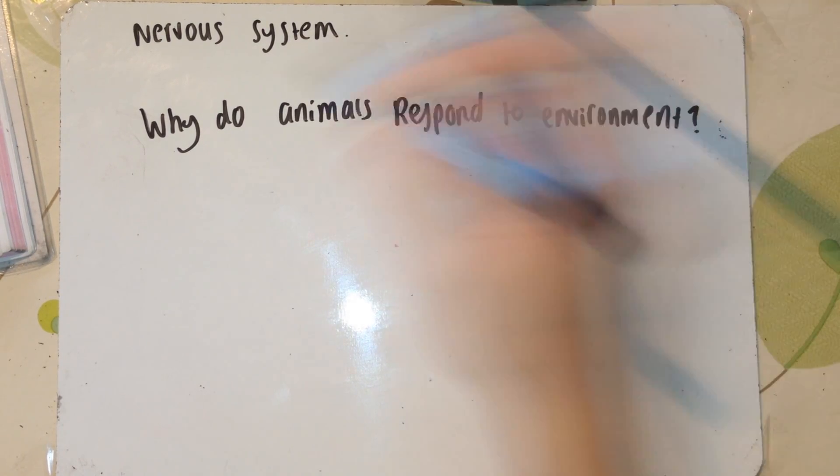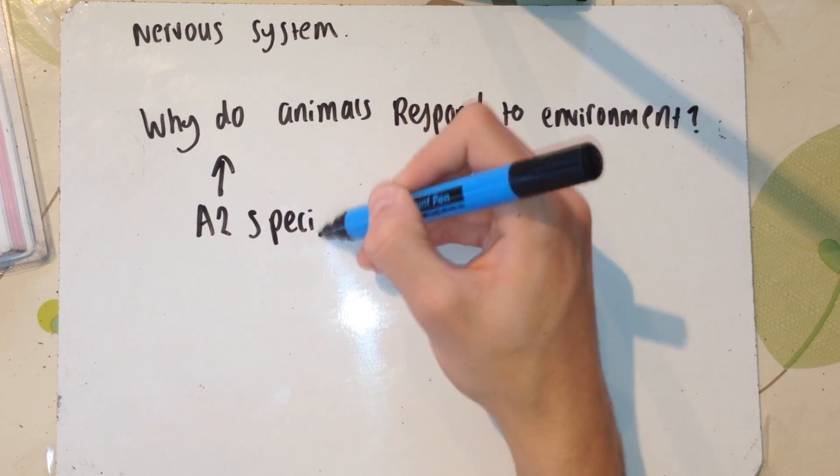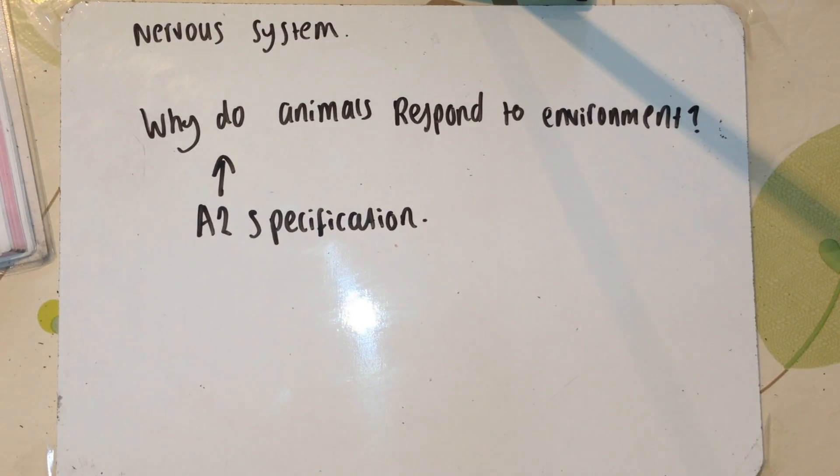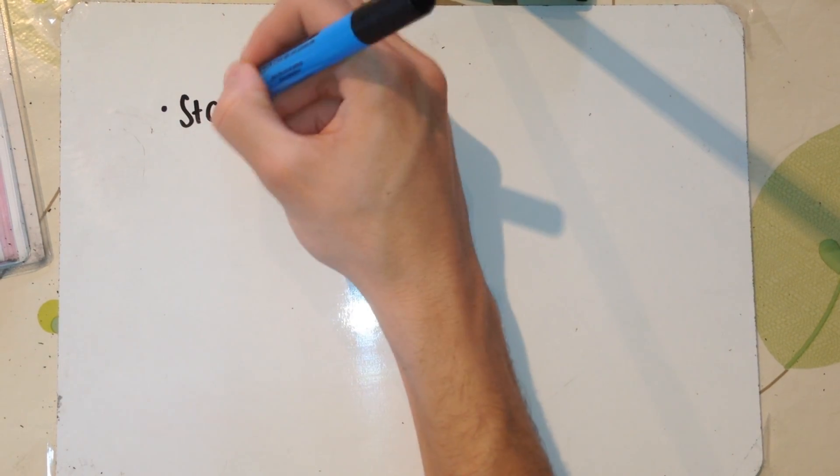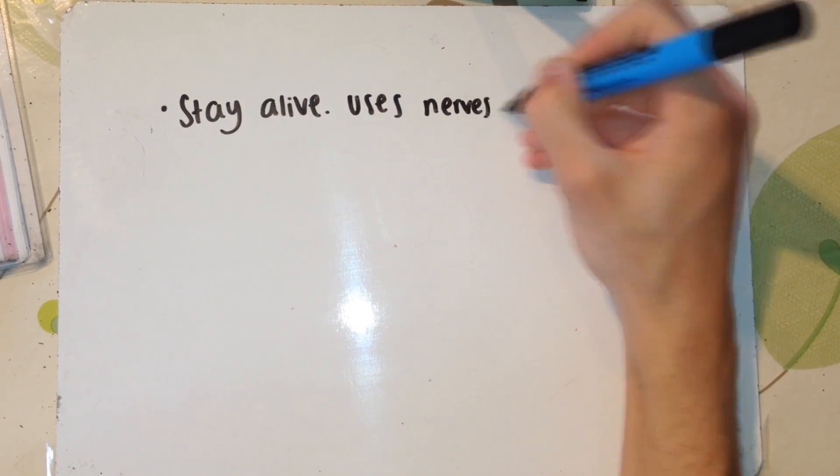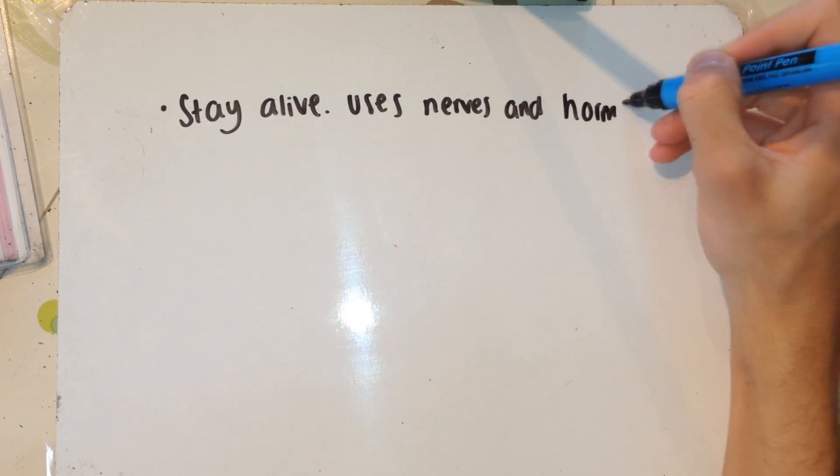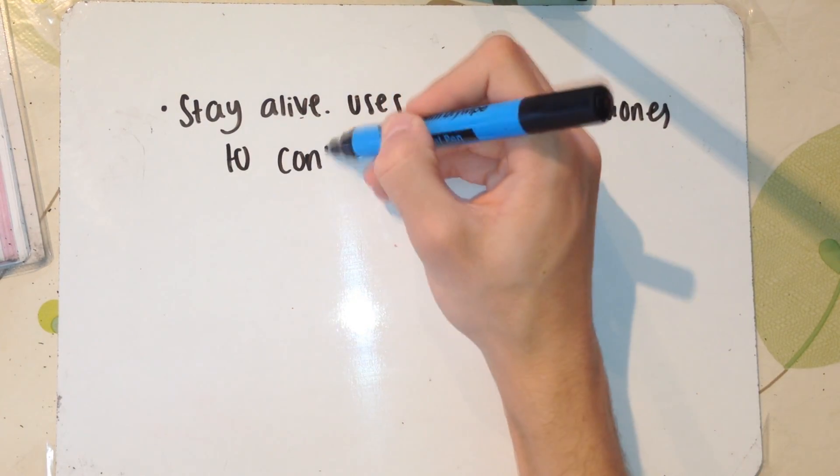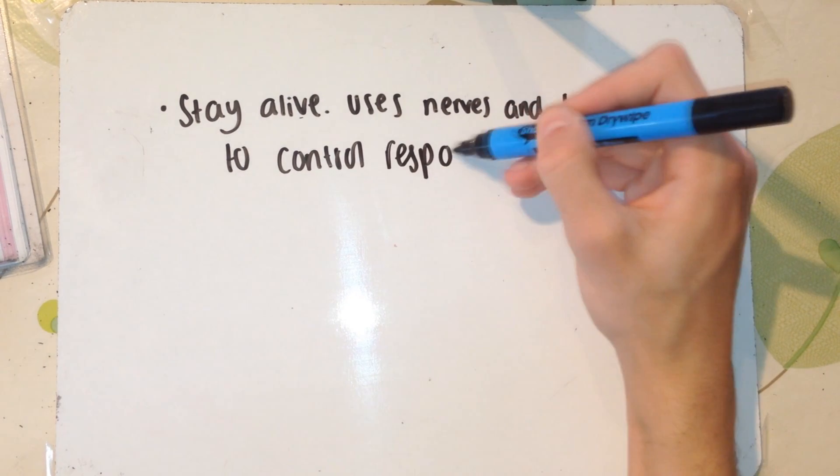The first part of the specification for this spread says discuss why animals need to respond to their environment. In short, the answer is to stay alive. Animals can stay alive and adapt to the changing environment by using hormones and nerves and a range of reflexes and body processes.